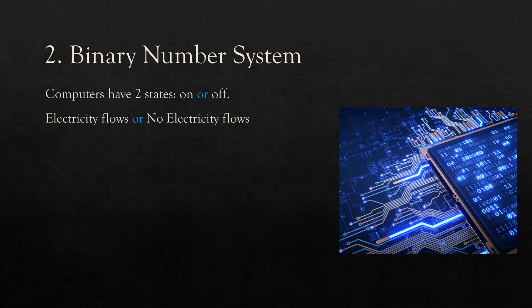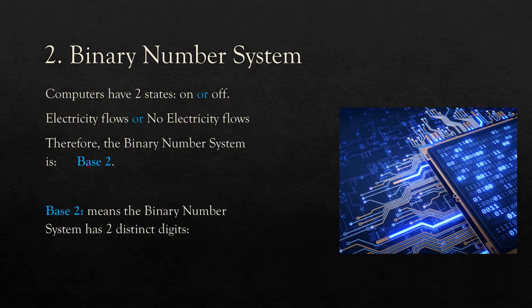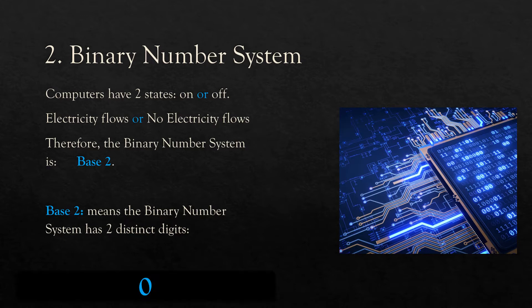Now that we've looked at how denary numbers are represented, let's have a look at the binary number system. Computers, unlike humans, have two states: either on or off. Either electricity is flowing through the wire — that's on, or there's no electricity flowing through the wire — so it's off, 0. Therefore, the binary number system is base 2. Base 2 means the binary number system has two distinct digits: 0 and 1.